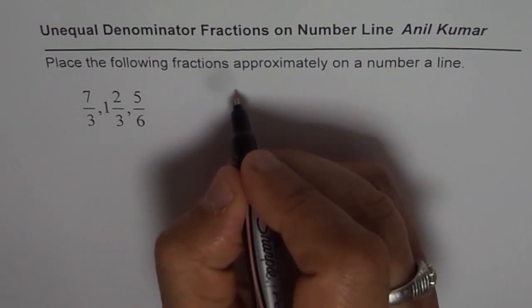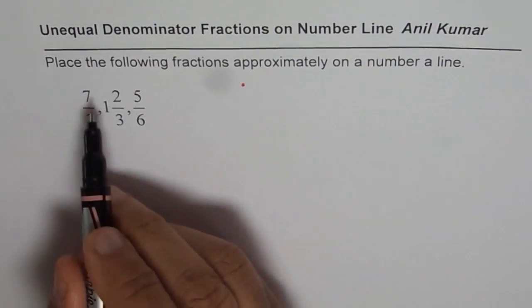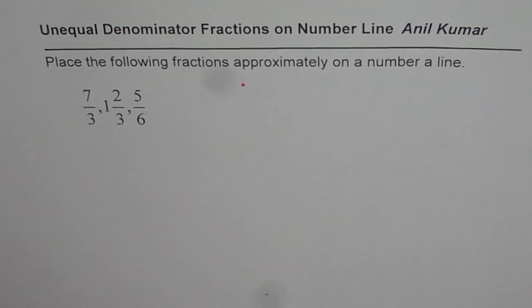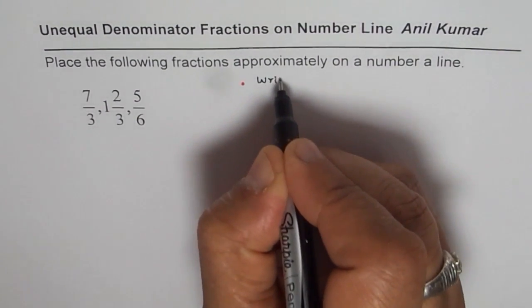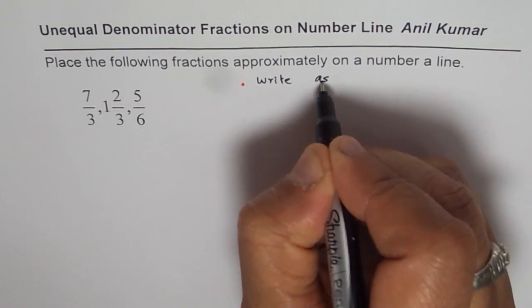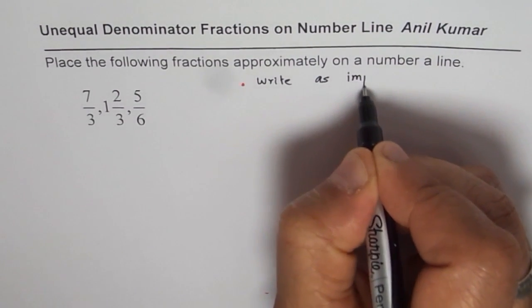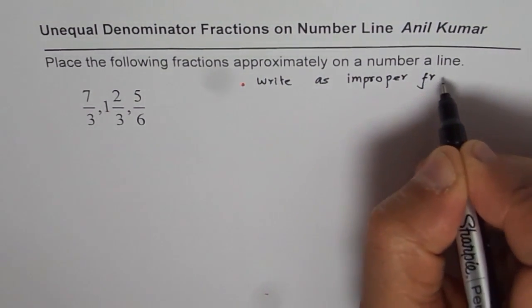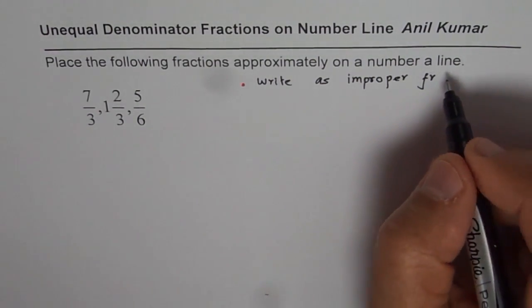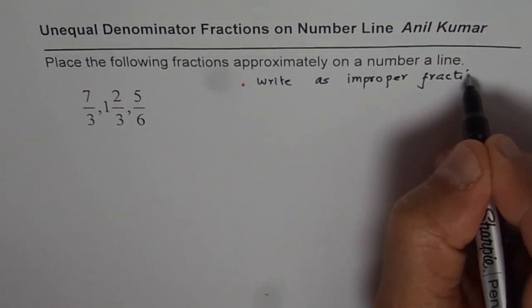The fractions are 7 over 3, 1 and 2 over 3, and 5 over 6. As you can see we have a combination of improper fraction, mixed numbers and proper fraction. Now it becomes difficult since the denominators are also not same.